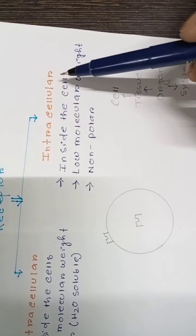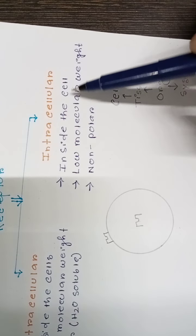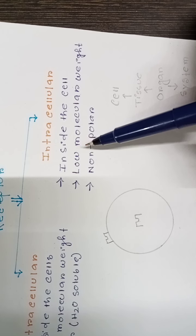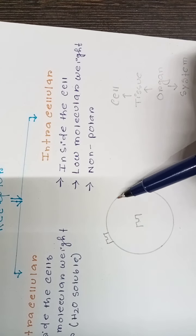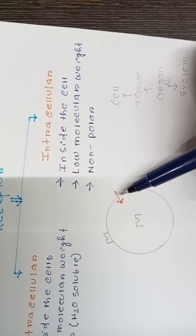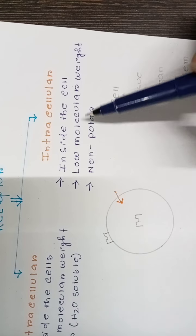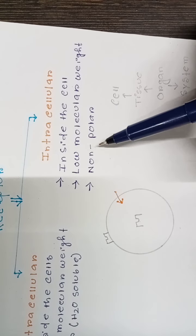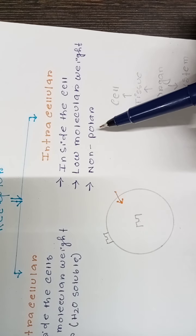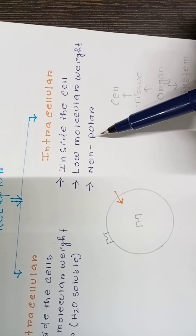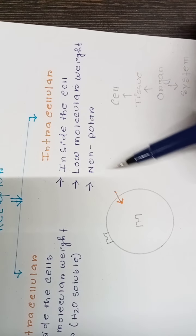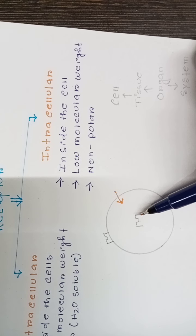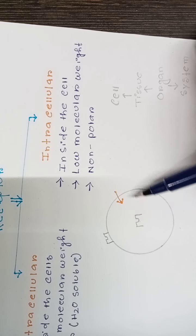For intracellular receptors, the molecules that bind inside the cell have a low molecular weight. If the molecular weight is low, the compound can easily enter inside the cell. Also, it must be nonpolar — meaning lipophilic, or lipid soluble. If the compound is lipid soluble, it can easily enter inside the cell because the cell membrane is made of phospholipid.